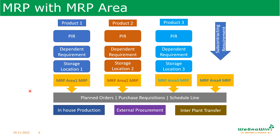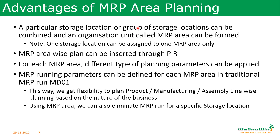We can create MRP areas for each production line or each product — MRP area 1, MRP area 2, MRP area 3, MRP area 4. We can run MRP separately for each MRP area. The output remains the same — planned orders, purchase requisitions, scheduling — but for individual MRP areas, giving us more flexibility. Each particular storage location, or group of storage locations, can be combined and called one MRP area. Please note that one storage location can be assigned to one MRP area only.